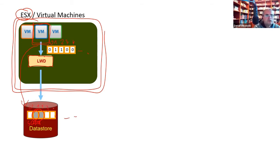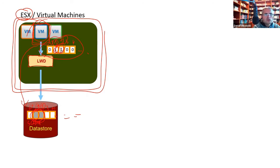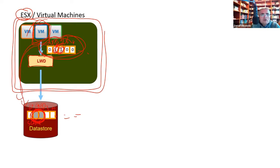The lightweight delta filter sees that, say, blocks 1 and 2 have changed, so it changes bits 1 and 2 in the bitmap to 1. This bitmap is our snapshot — always on. If we want to perform a backup, we know we only need to read those two blocks, just one megabyte. We don't make any VMware snapshot, we don't pause any application. During the write operation we're just changing some bits. That's all — nothing else.